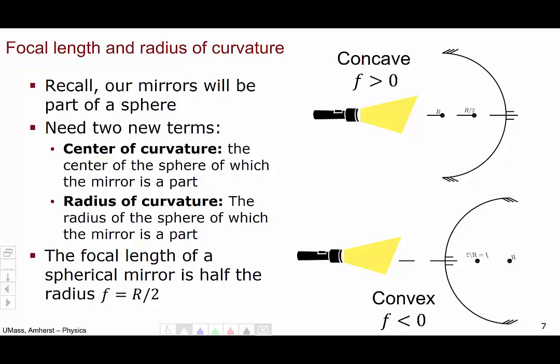The focal length of any spherical mirror is half the radius. Here on the right, we have a concave mirror on the top with positive focal length, and a convex mirror on the bottom with negative focal length. The distance r is the radius of the sphere of which this mirror is a part, and the focal length is half that radius.